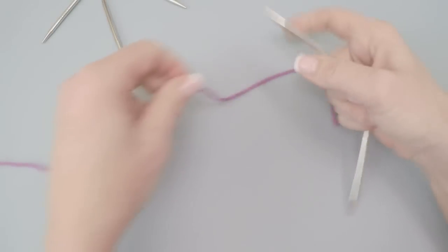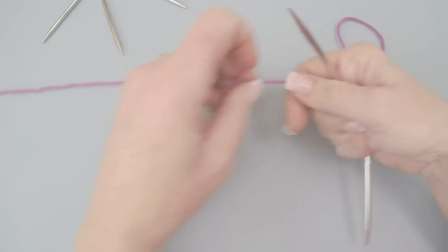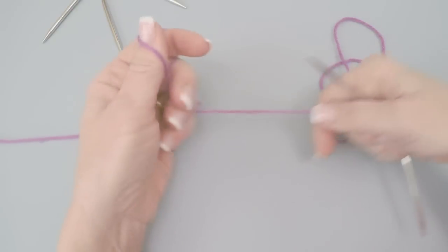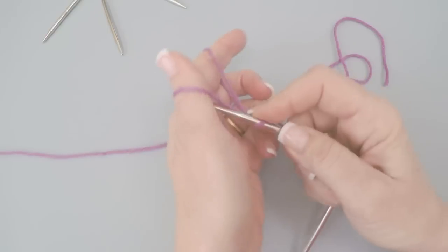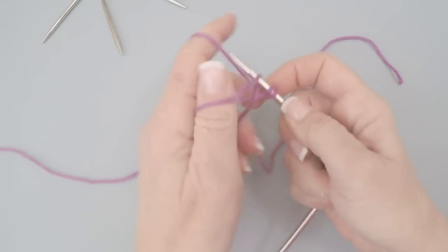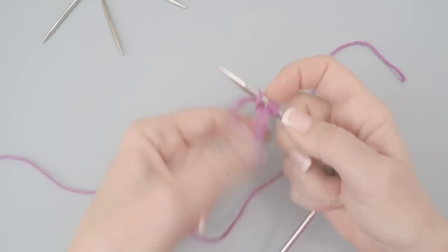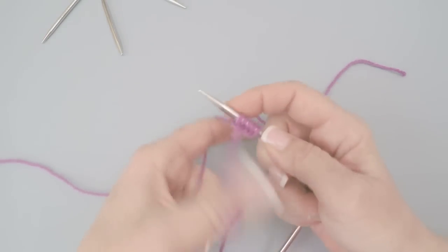So we'll start with one needle and we'll cast all our stitches onto one needle. Anybody who's watched my videos before knows I always cast on an extra stitch for the join. So we're just going to do a long tail cast on and I'll just cast on 10 stitches plus one.